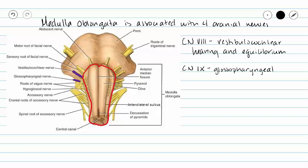Cranial nerve nine, our glossopharyngeal, is involved in touch, pressure, temperature, taste, and pain in the back of our mouth where our oral cavity meets our pharynx — the upper part of your throat. Our glossopharyngeal is also involved in chewing, salivation, and swallowing.